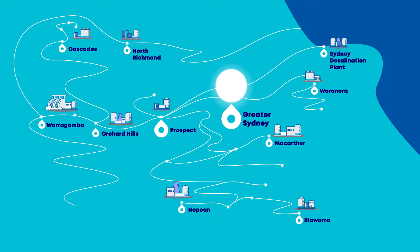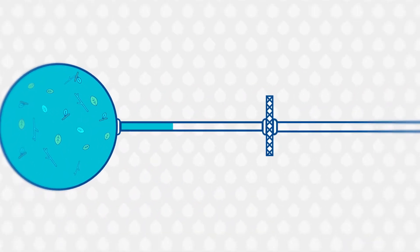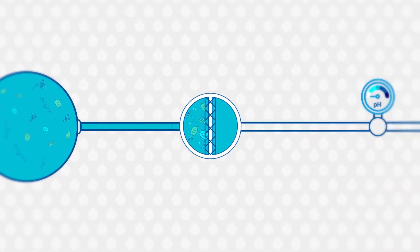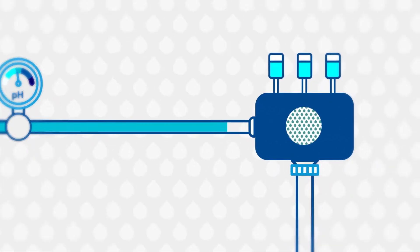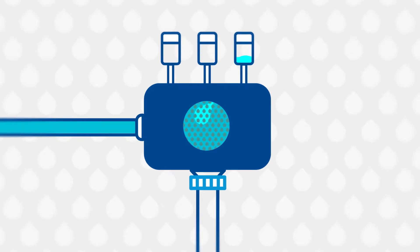Let's explore a little deeper. The first thing we do is screen the water to remove large objects like leaves and debris, adjust the pH or alkalinity and add a coagulant which catches smaller particles and microorganisms.